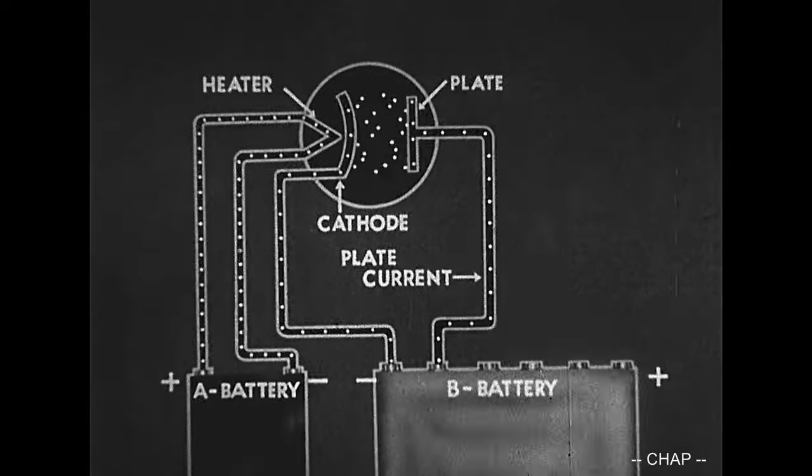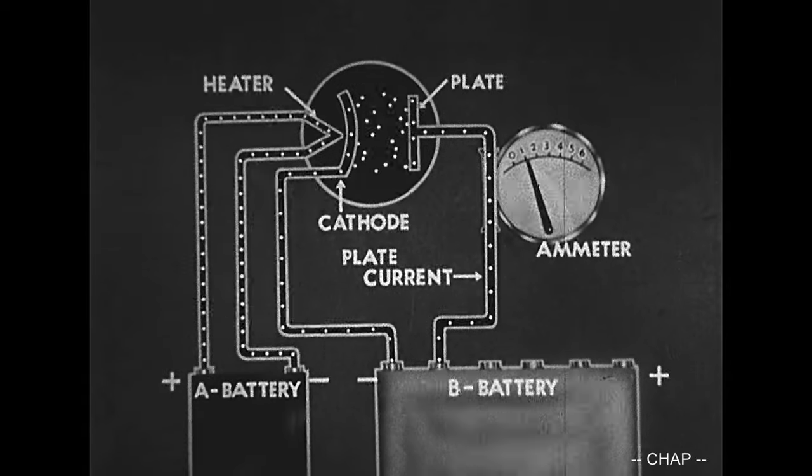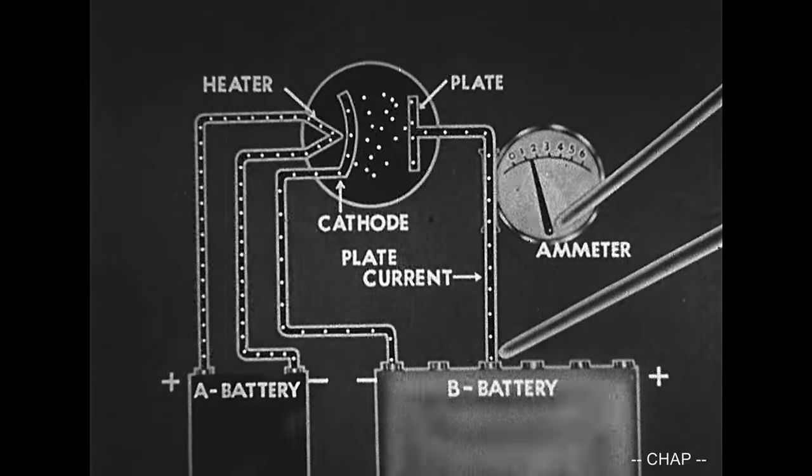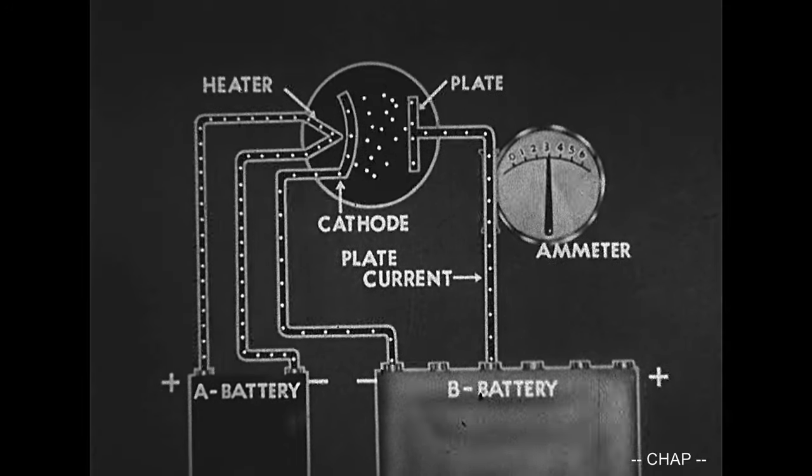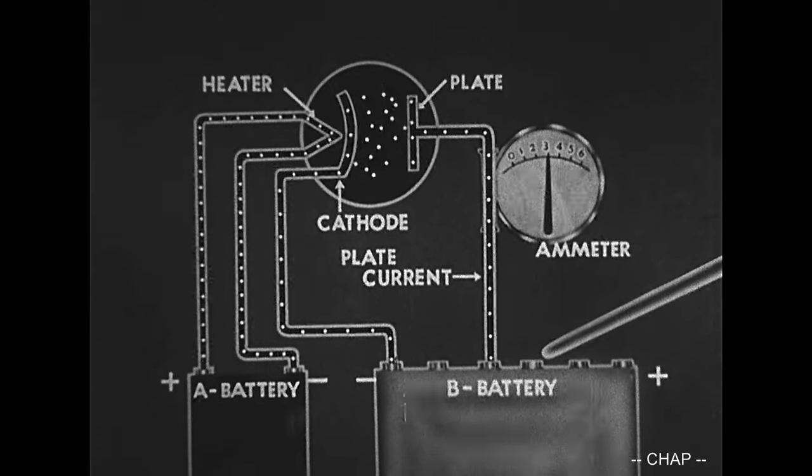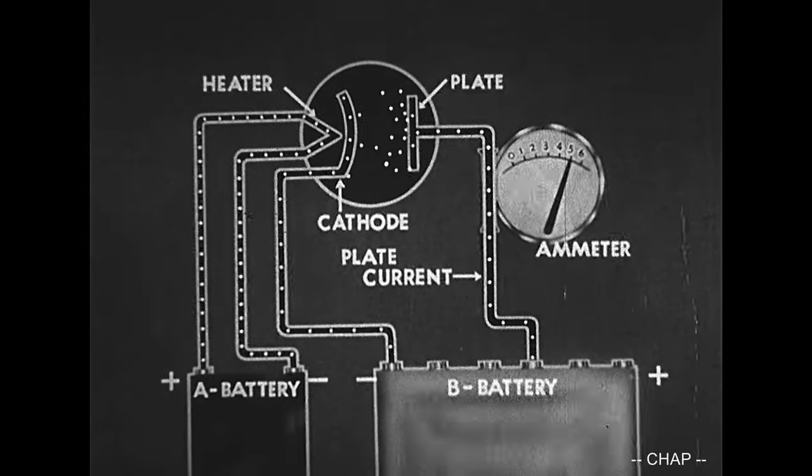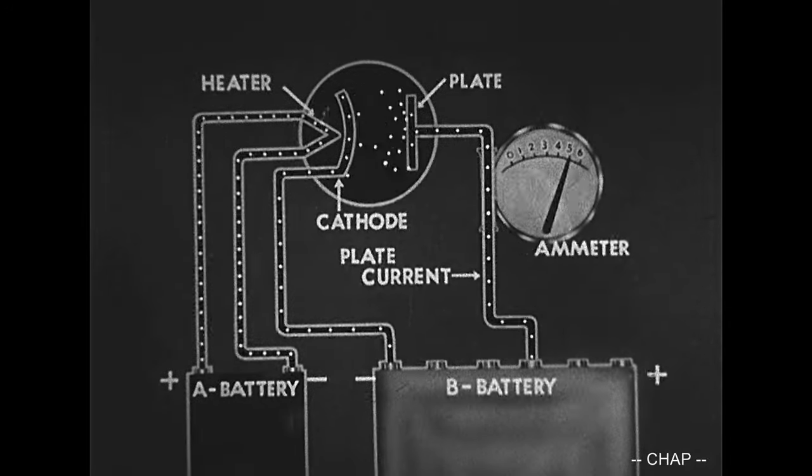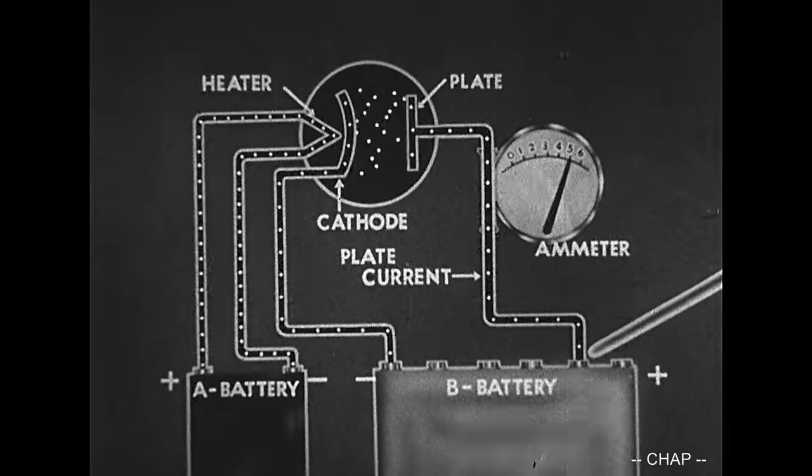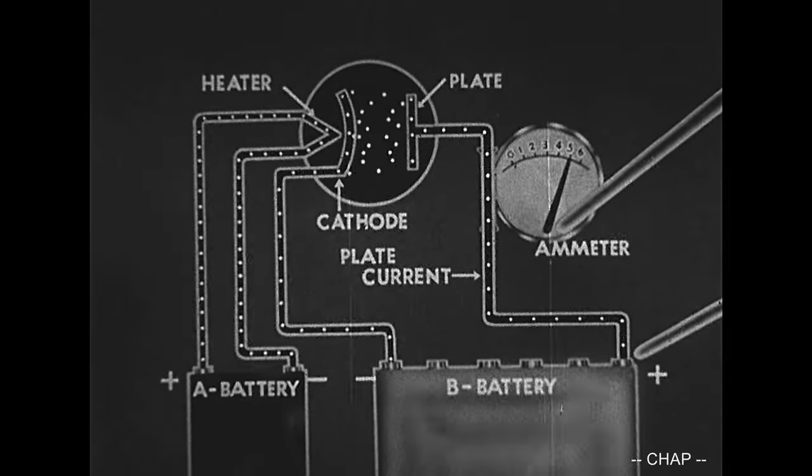This current may be measured by placing an ammeter in the circuit. If we increase the voltage on the plate, the ammeter shows an increase in current. Increasing plate voltage by another step leads to another increase in plate current. However, when the plate voltage is made still higher, no change is seen in plate current. We have reached the limit of the tube. This limit, known as saturation, is the point at which all available electrons are attracted to the plate.